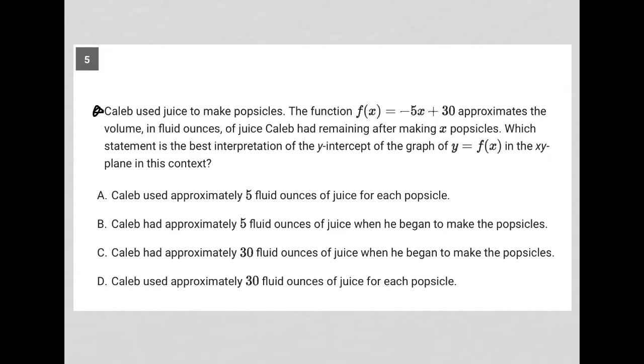So this question says, Caleb used juice to make popsicles. The function f(x) = -5x + 30 approximates the volume in fluid ounces of juice Caleb had remaining after making x popsicles.